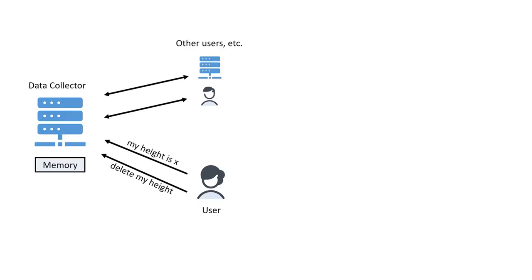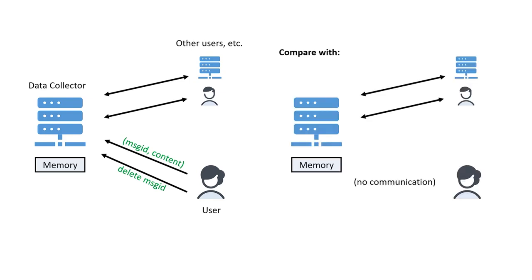So here is our setting. There is an abstract data collector — in our examples, the research agency — which has its memory and talks to a bunch of users and possibly other service providers. It receives data from users, and users may sometimes ask for the data to be deleted. To abstract things out, we assume all data sent by users comes in messages of the form (ID, content), and when a user wants their data deleted, they say 'delete the message with this ID.'